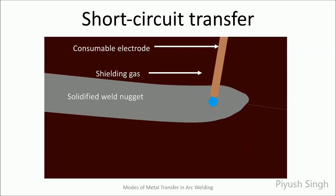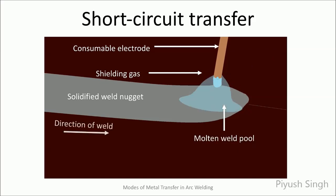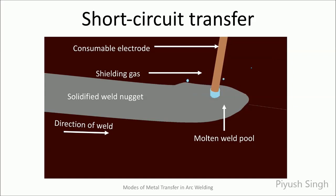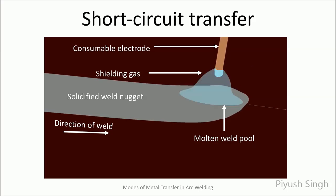Here is an animation of short circuit transfer. Short circuit or dip transfer, commonly called short arc, is a mode of metal transfer with low heat input, where transfer of metal from electrode to weld puddle occurs by a series of electric shorts. As the welding wire is fed, it makes physical contact with the base material and creates a short. As the short occurs, the voltage immediately drops to zero and the welding arc diminishes. This phenomenon occurs several times every second.